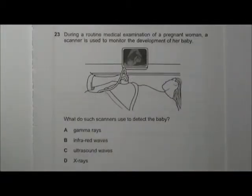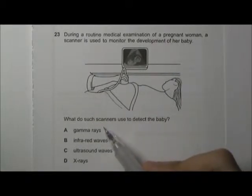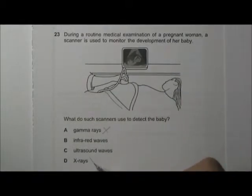Okay, in this question, we are asked which component of the EM waves does the scanner use to detect the development of the baby? Okay, straight away we can eliminate gamma ray and x-ray because they are highly energetic and they are going to harm the fetus.